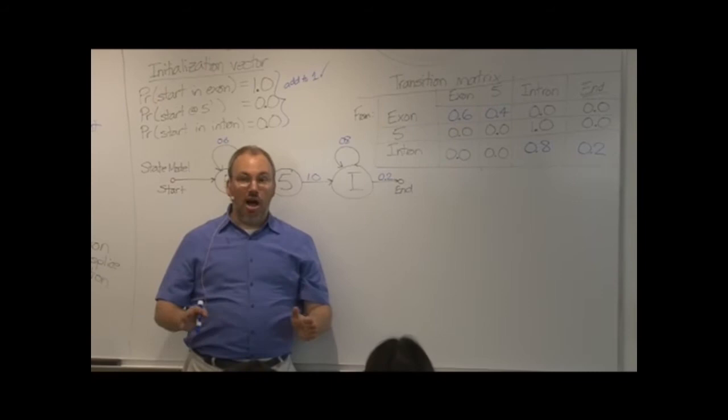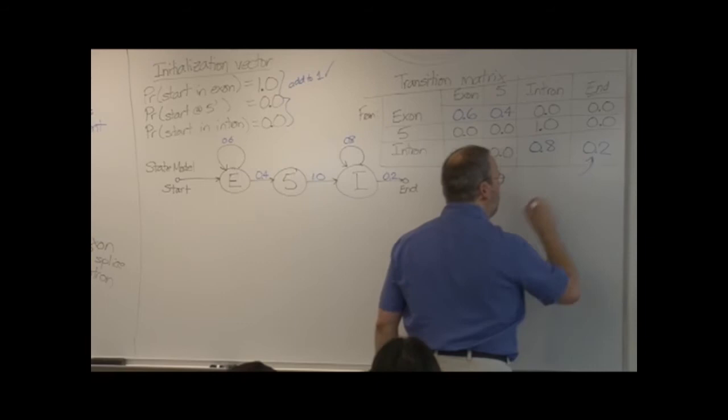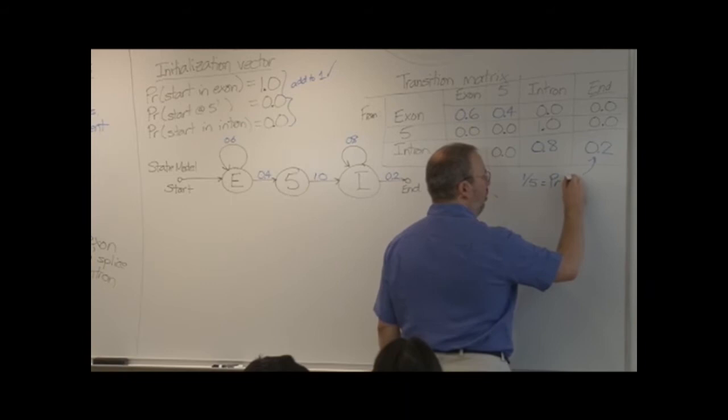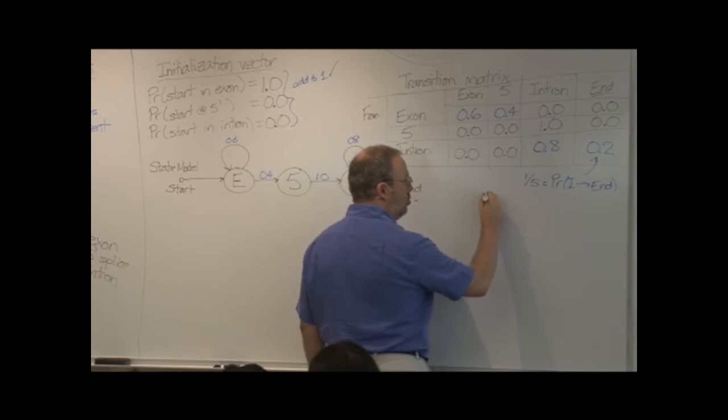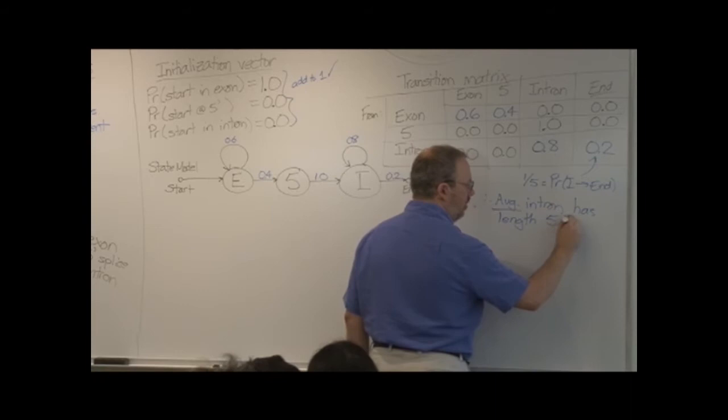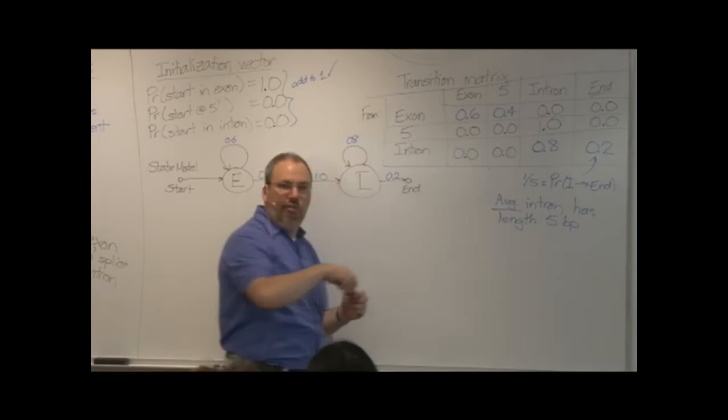It is possible to show mathematically. I'm not going to do that for now, though if people want to, I can show them later. We can write this 0.2, the probability of ending, as one-fifth. So, that's the probability of going from an intron to the end. This corresponds to an average intron of length five base pairs. Just the reciprocal of one-fifth.